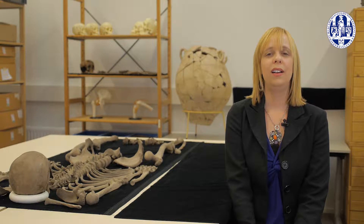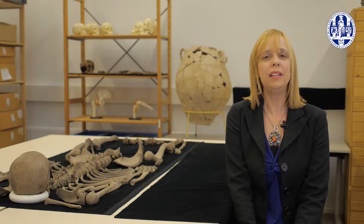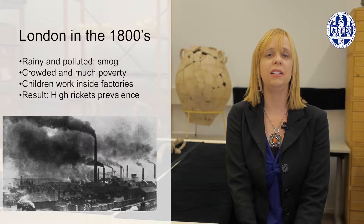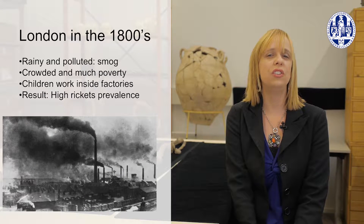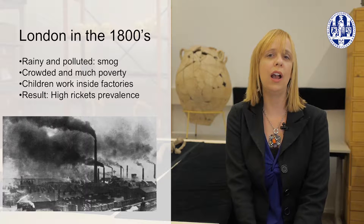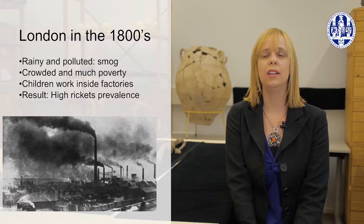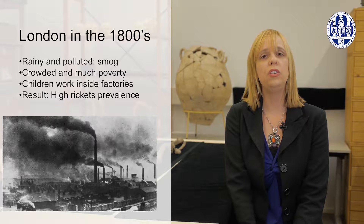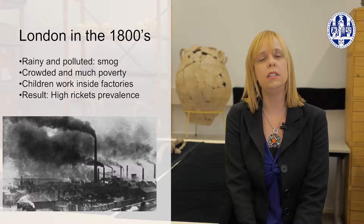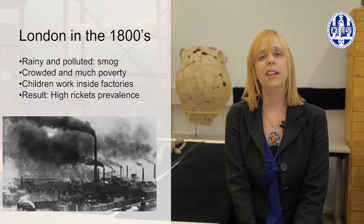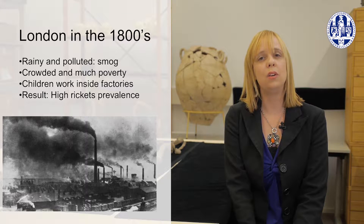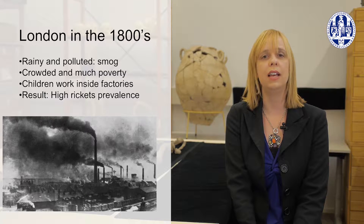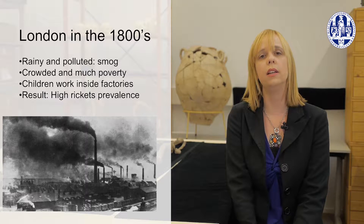If you think about rickets and life in the past, you may immediately think of cities from not long ago — cities such as 19th century London, England, envisioned as dirty, polluted by smog, and crowded with high levels of poverty. A city that doesn't have a lot of sunlight to begin with, including children often working long days in dim factories. This characterization indeed holds true for many such places, and it's not surprising we find a lot of sub-adults with rickets.